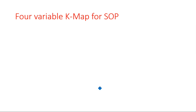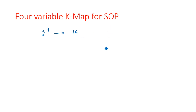In previous videos I explained K-maps for two variable and three variable. Two variable K-maps have inputs A and B with combinations 0,1. In three variable we used Gray code representation. The same is extended for four variable K-map: two to the power four gives 16 total combinations, so we need 16 blocks.